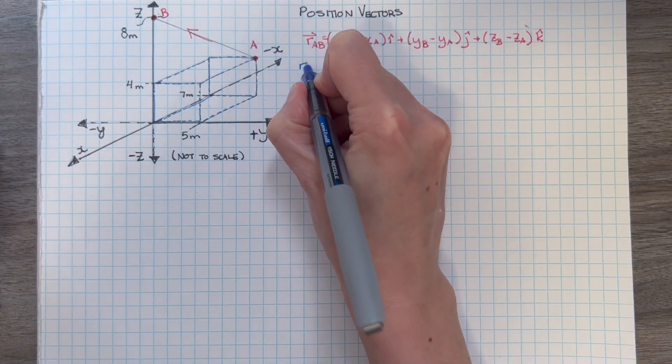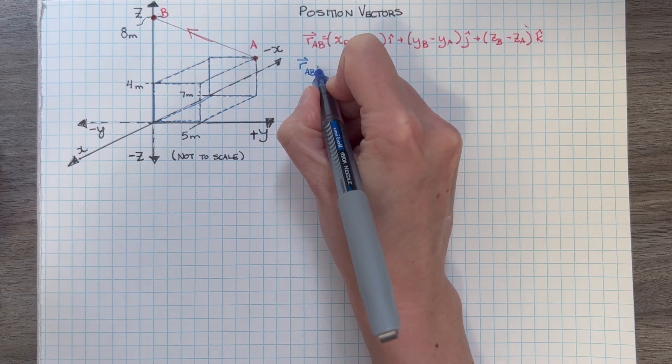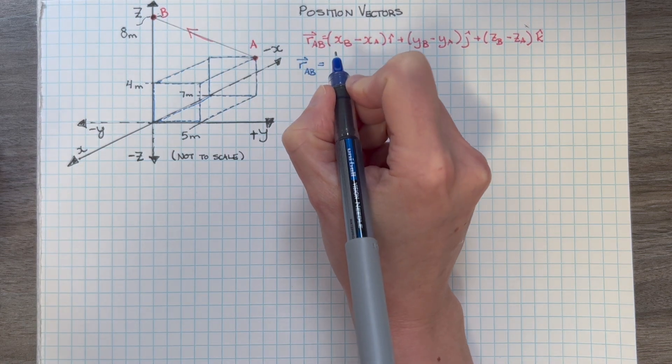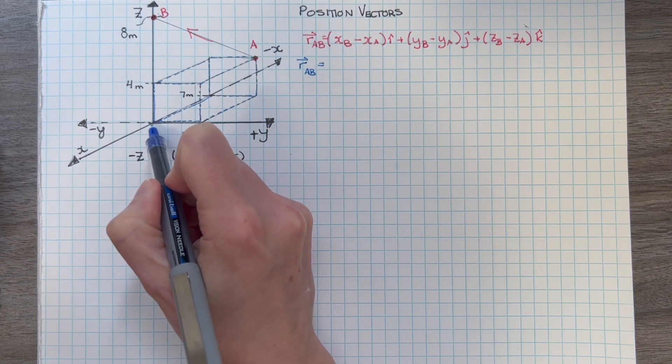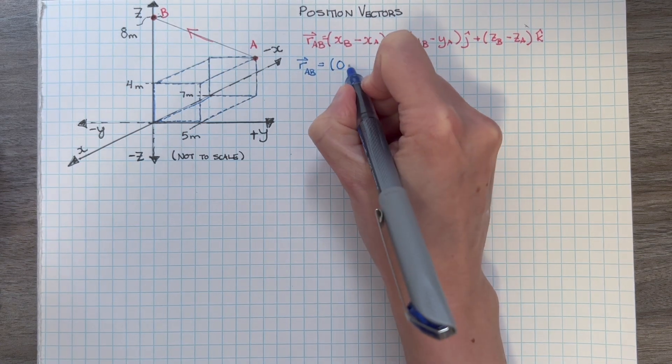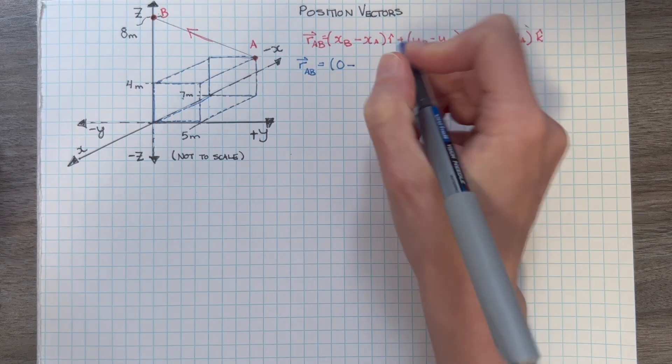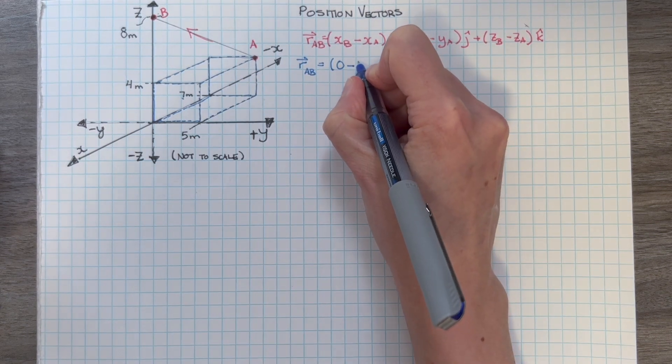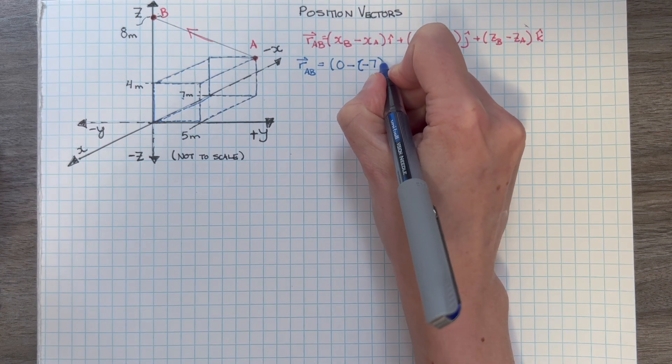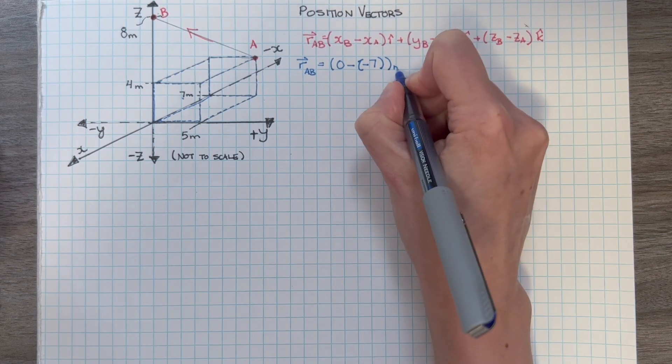We look at each of the three primary directions one at a time to describe where B is relative to A. In the x direction, at B, we are at x equals 0. And at A, we are at x equals negative 7. Simplifying, that means that going from A to B, we have moved 7 meters in the positive x direction. We do the same thing for the y and z directions.